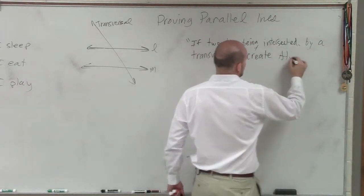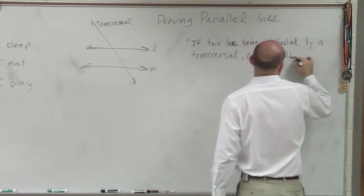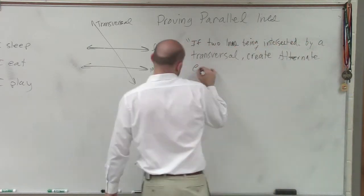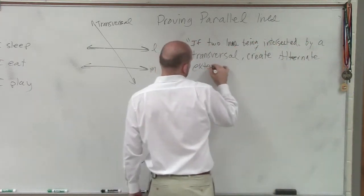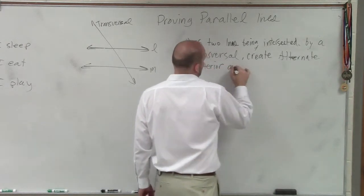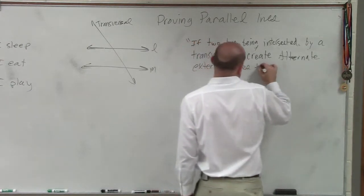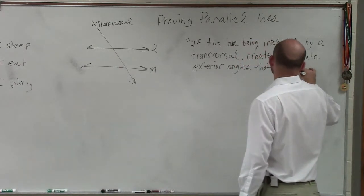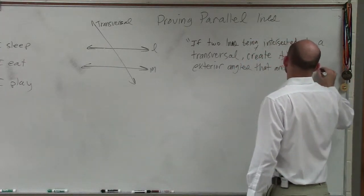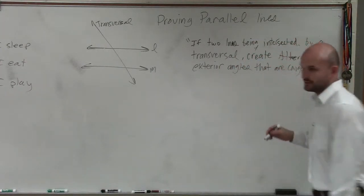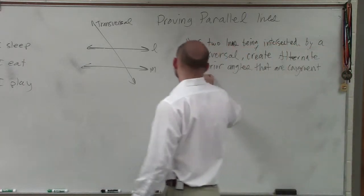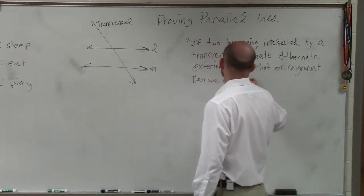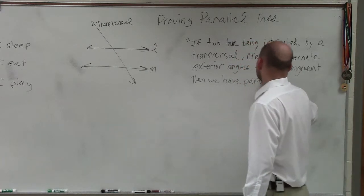Now let's go to alternate exterior angles that are congruent — that means equal in measure. Then we have parallel lines.